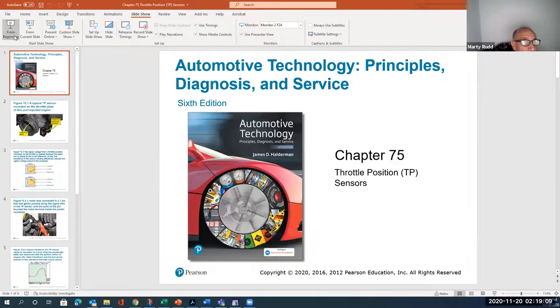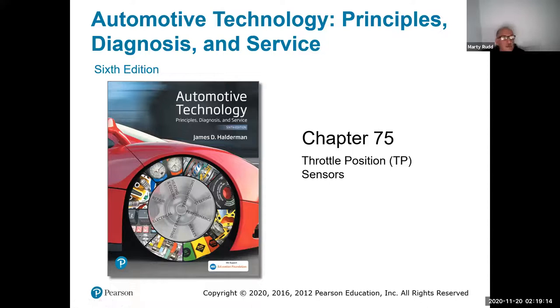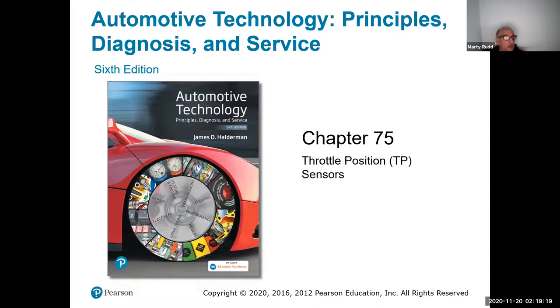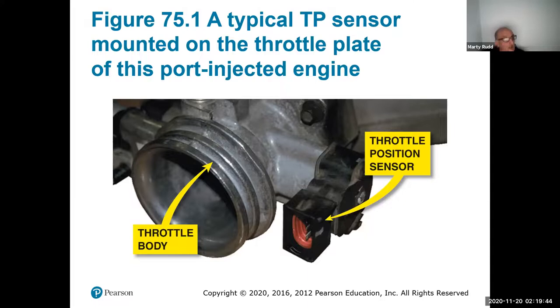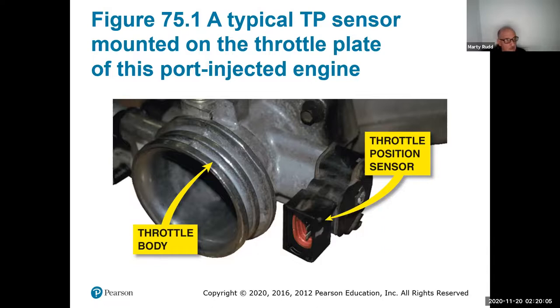This is a throttle position sensor, and it represents demand from the driver. As you push down on the actual accelerator pedal, it sends a signal back to the computer to give it enrichment and timing to accelerate. This is old style here — a throttle body that allows air to come in. This is going to be on a port-injected system on a Ford. This one has three pins, compared to the coolant sensor which is two wire — the TPS is going to be a three wire sensor.